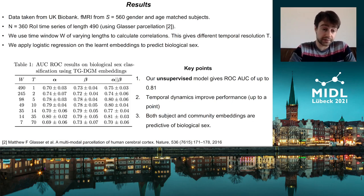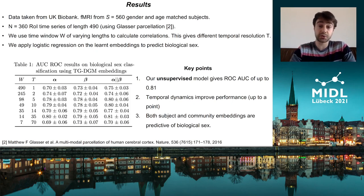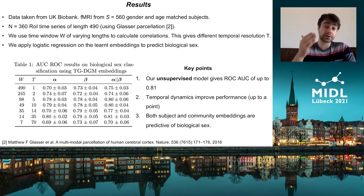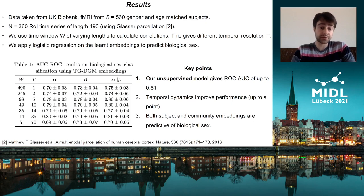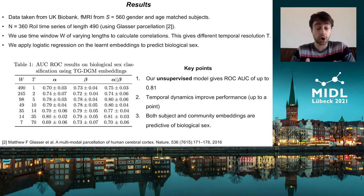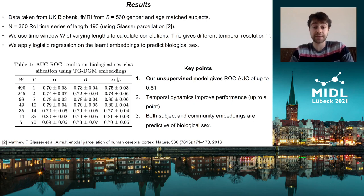We do this at different levels of temporal resolution as you can see in Table 1, and we do this for the subject embeddings, the averaged community embeddings, and also a concatenation between the subject and community embeddings. The key takeaways are that our model can achieve good performance of up to 0.8 AUC. Both the community and subject embeddings are able to achieve this level of performance. We also demonstrate that dynamic functional connectivity does in fact improve performance on the task of biological sex classification.